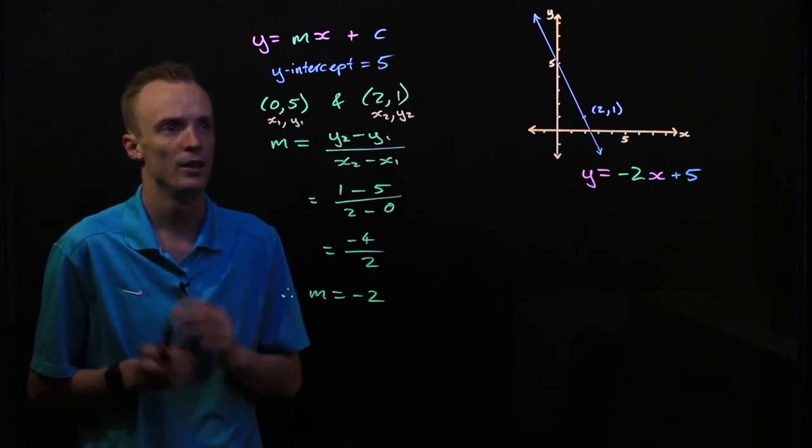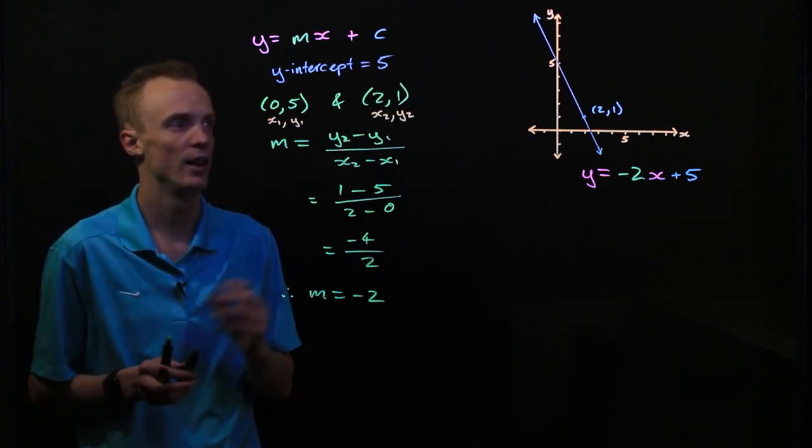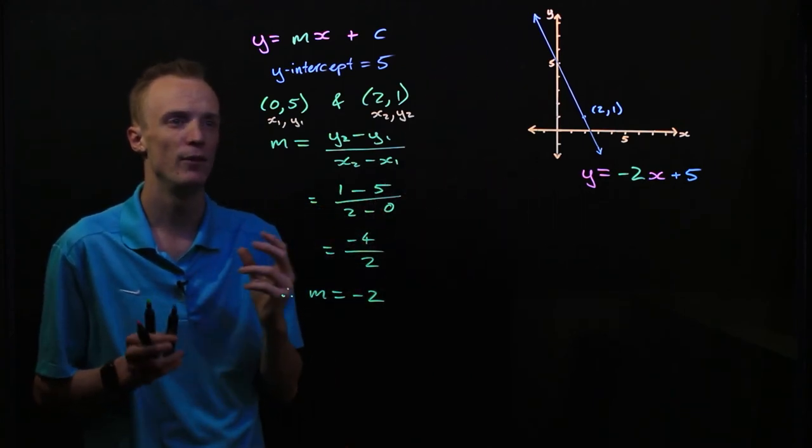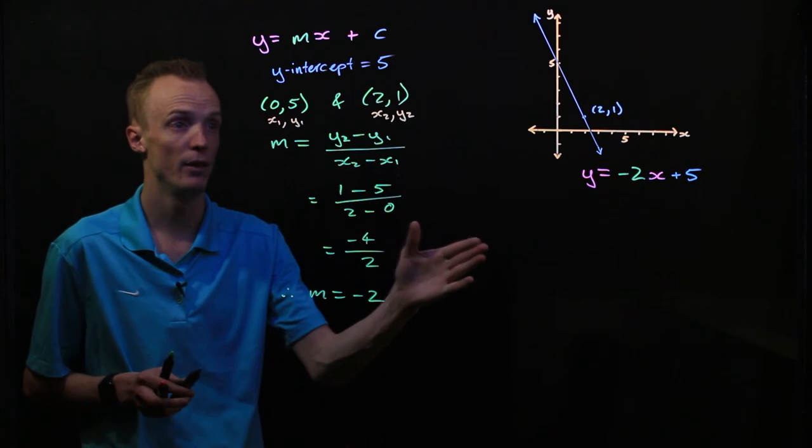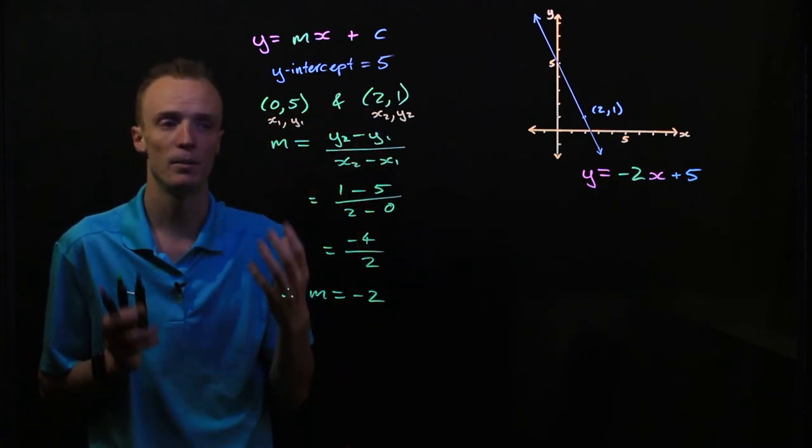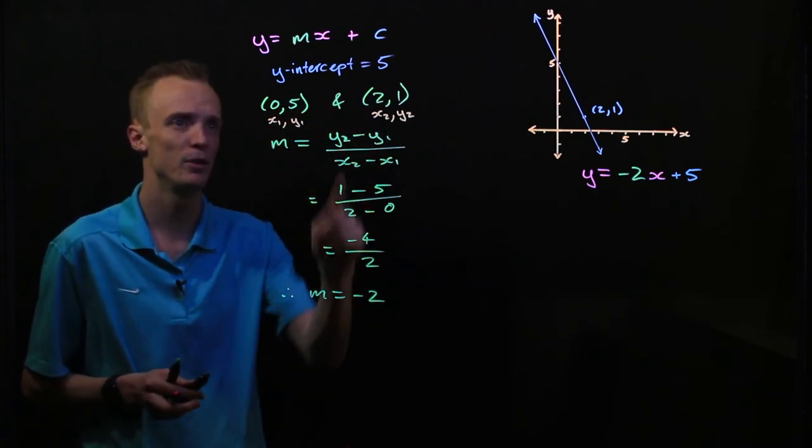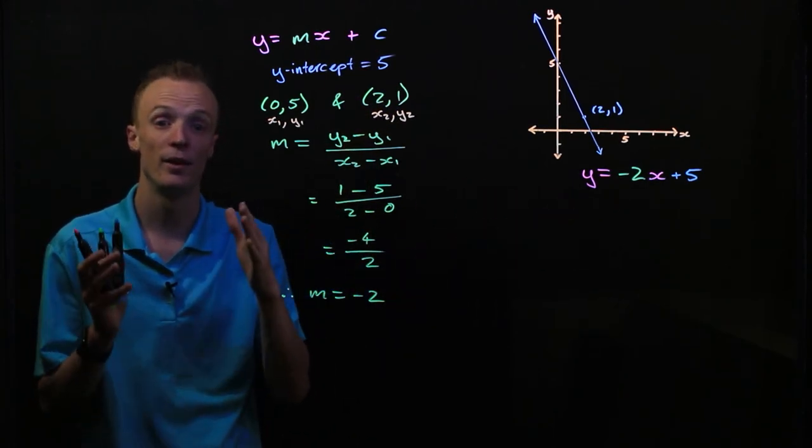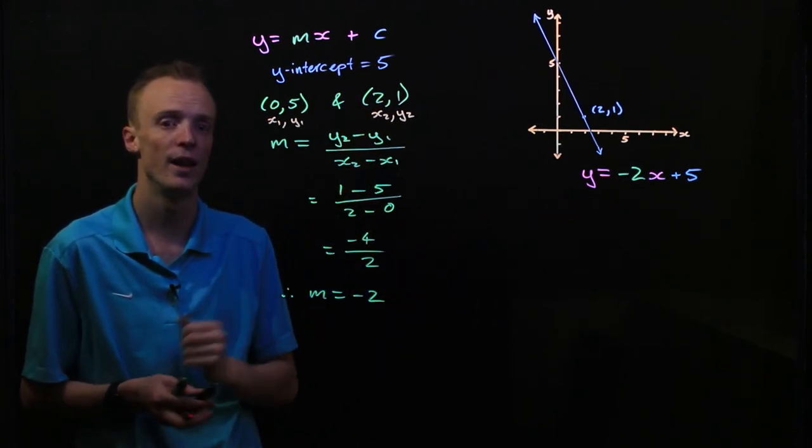To summarize, to represent an equation in y-intercept form from a graph that we've got, if you can identify the slope of the graph and identify the y-intercept of the graph, we can immediately substitute those values back in to identify the equation that represents every coordinate that lies on that linear line.